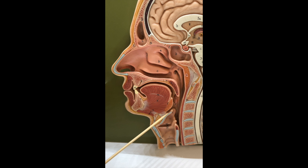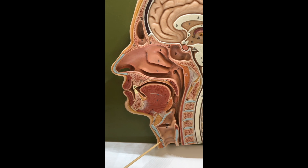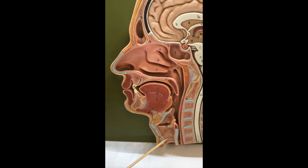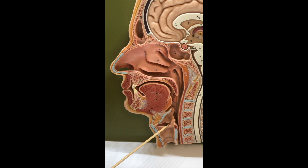The laryngopharynx runs from the epiglottis to the cricoid cartilage at the level of the sixth cervical vertebrae, and the laryngopharynx contains the vocal cords.